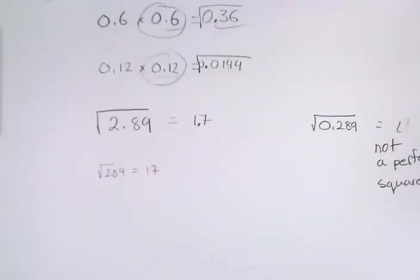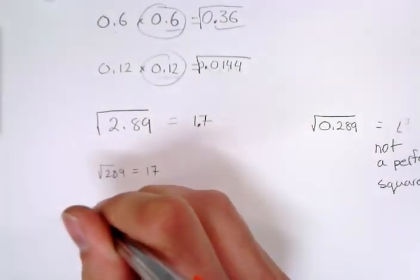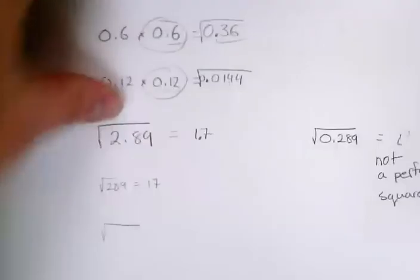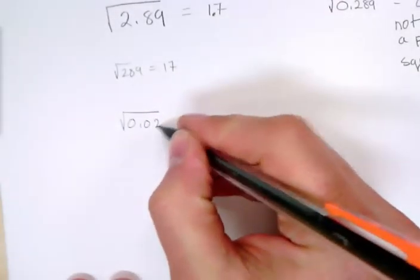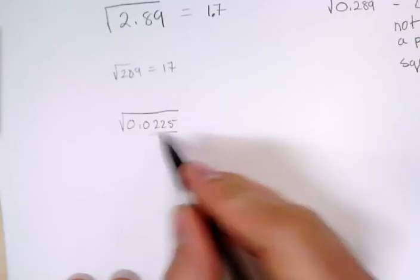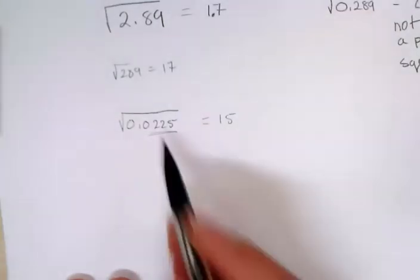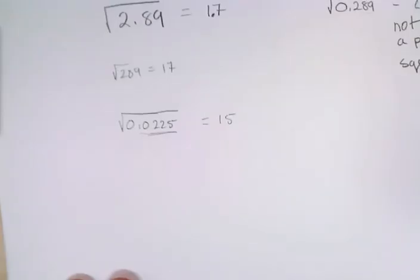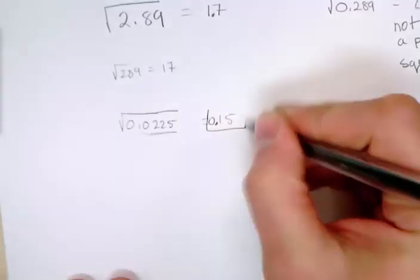Let me give one more example. Let's try the square root of 0.025. I know the square root of 225 is 15. I look at this — I have four numbers behind the decimal. So I'm going to half the amount of numbers behind the decimal to get the root, which is going to give me 0.15. So my answer here is 0.15.